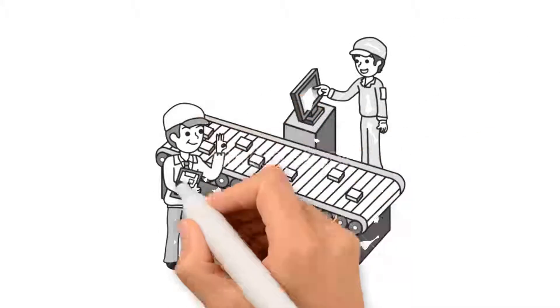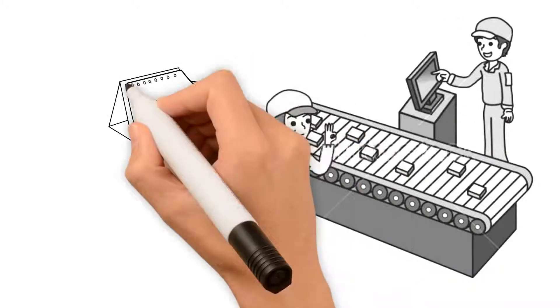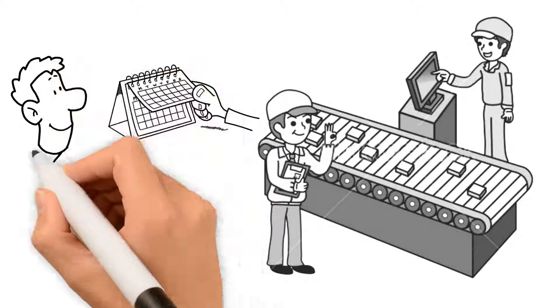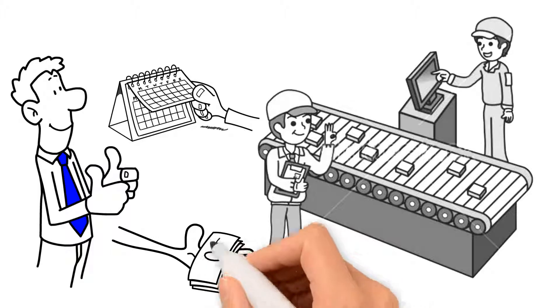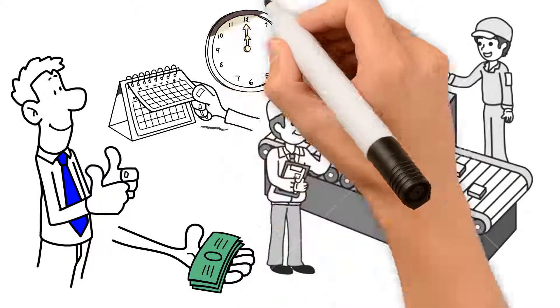We can schedule and track preventative maintenance based on operating hours of the machines, a much more accurate system than calendar-based scheduling. Dave can now pay for his monitoring based on the hours his machines run.